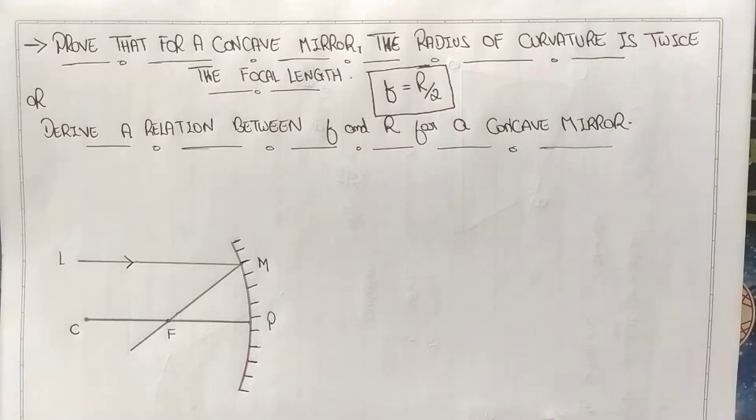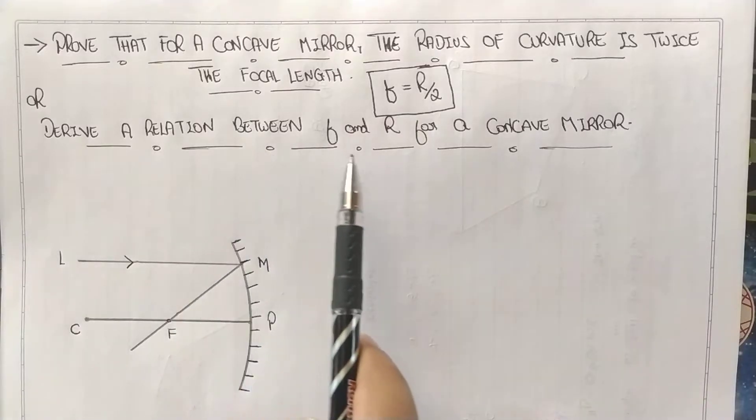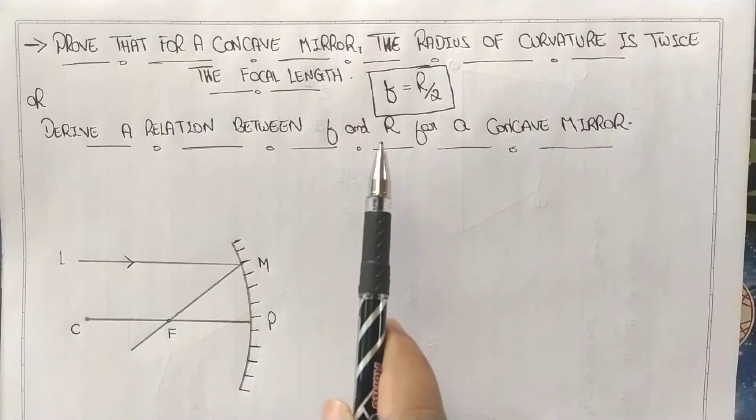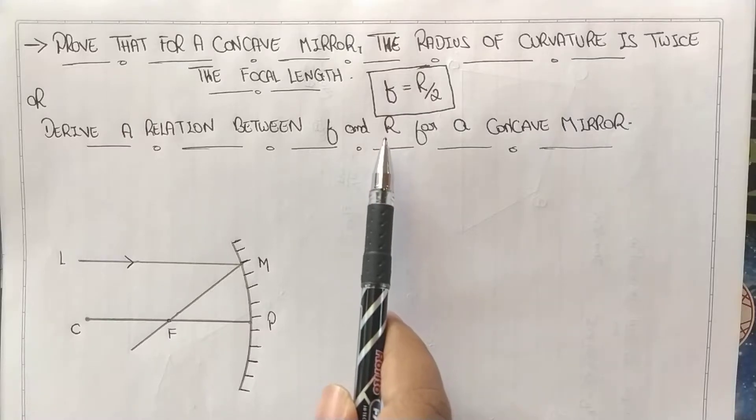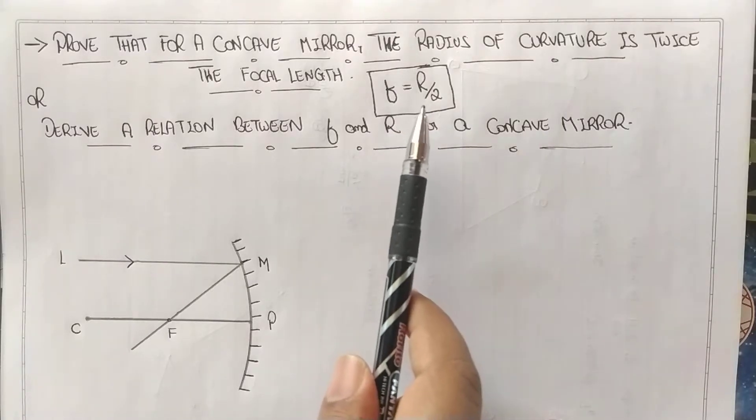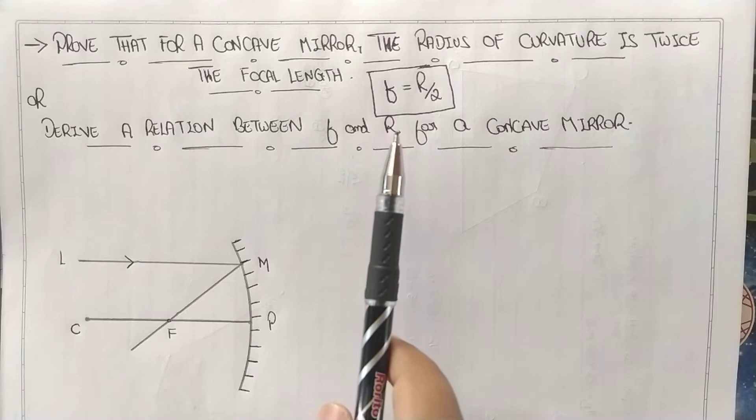Hello everyone, welcome back to my channel. Today we are going to derive a relationship between focal length f and radius of curvature r, which is given by f equals r by 2. This derivation is from the chapter on ray optics and optical instruments.